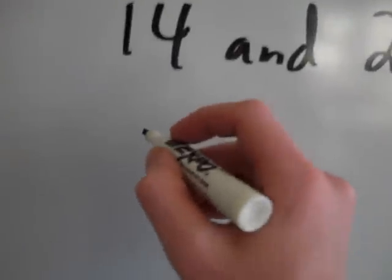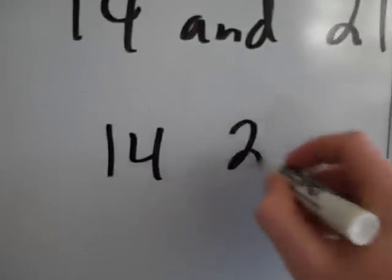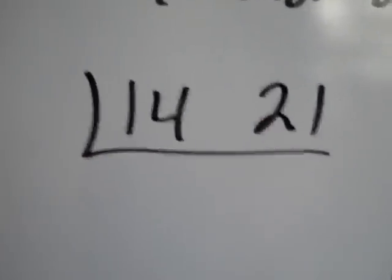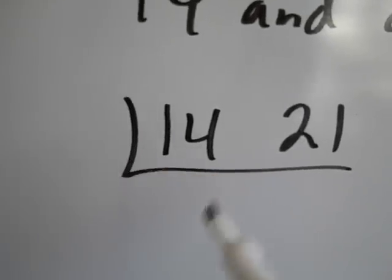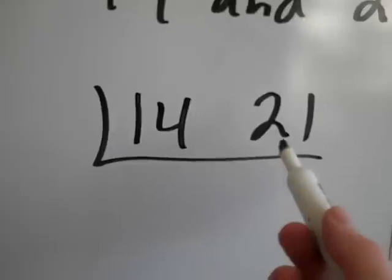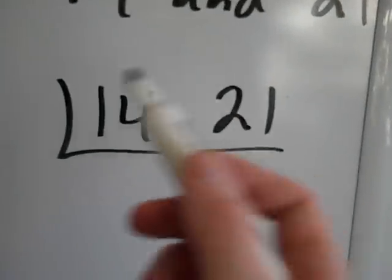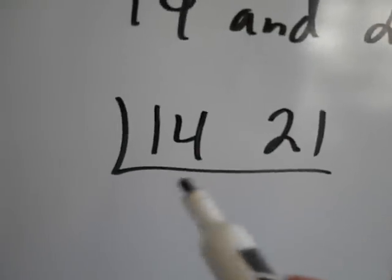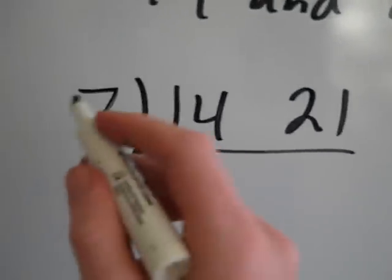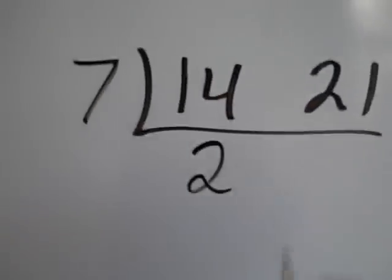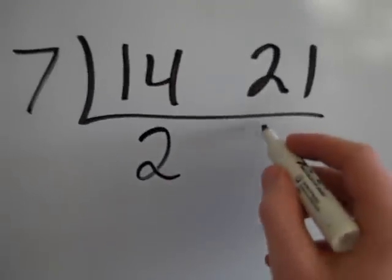So here I'm going to look at 14 and 21. So again, I'm going to put them in a division ladder. This is also called a factor ladder. And I think about numbers that I can factor out. 2 works on this, but not on this. 3 works on this, but not on this. 7 works on both.